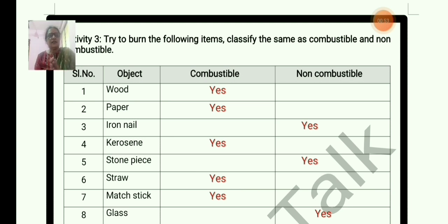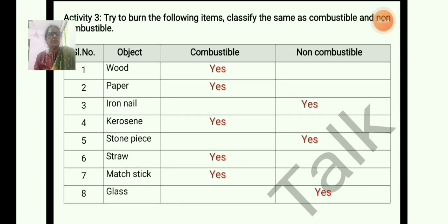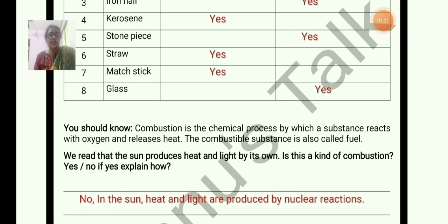So from the list we can identify which are combustible and which are non-combustible. All combustible substances are also known as fuels. So what is combustion? Combustion is a chemical process by which a substance reacts with oxygen to release heat and light — that is called combustion.